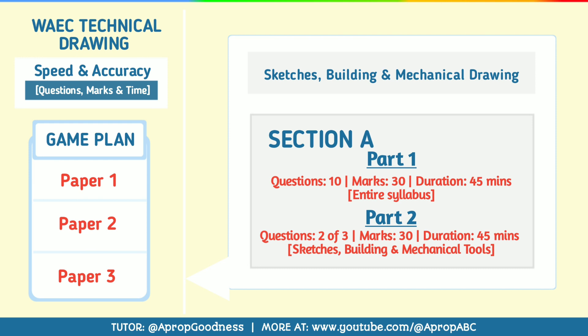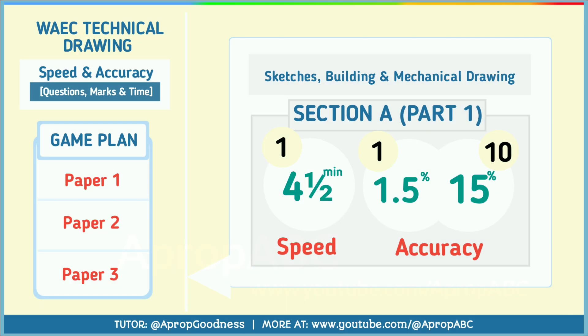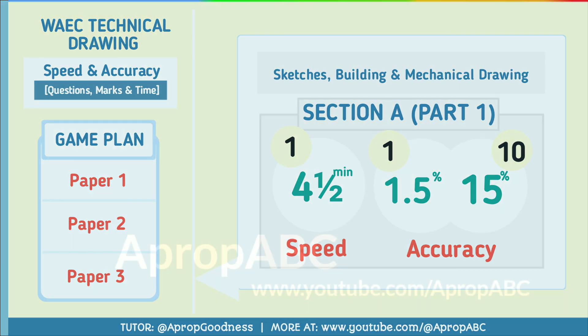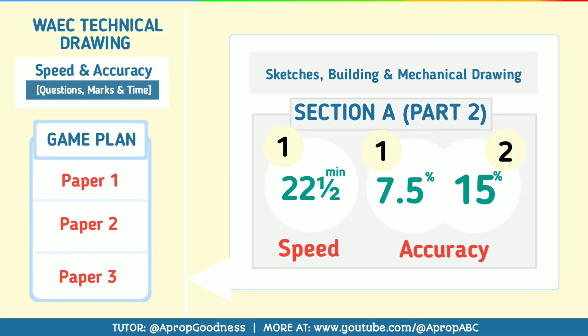On speed and accuracy for Section A: for Part 1, you should be as fast as 4.5 minutes per question. If you get one question correctly, that is 1.5% of your total task. For Part 2, you must be as fast as 22.5 minutes per question. If accurate, each question gives you 7.5%, and for two questions that is 15%.